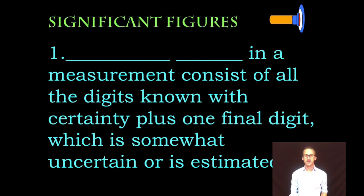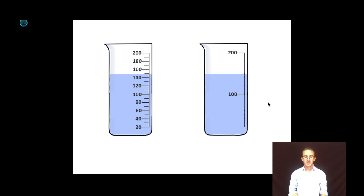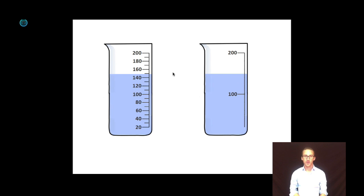So first things first, what in the heck is a significant figure? A significant figure in a measurement consists of all the digits known with certainty plus one final digit which is somewhat uncertain or is estimated. I want you to take a quick look at the two beakers on your screen. Notice that the one on your left has far more graduations than the one on your right,